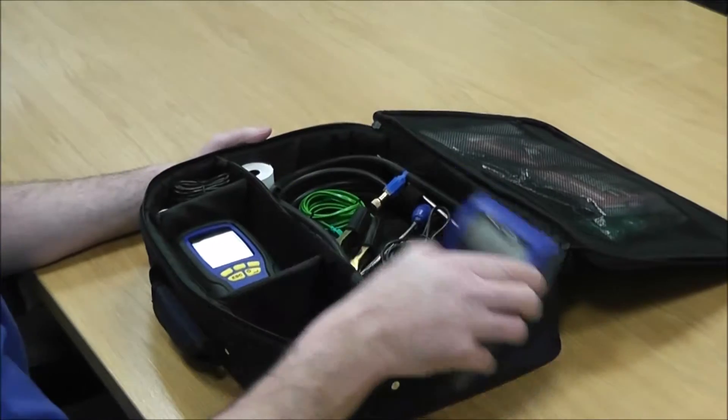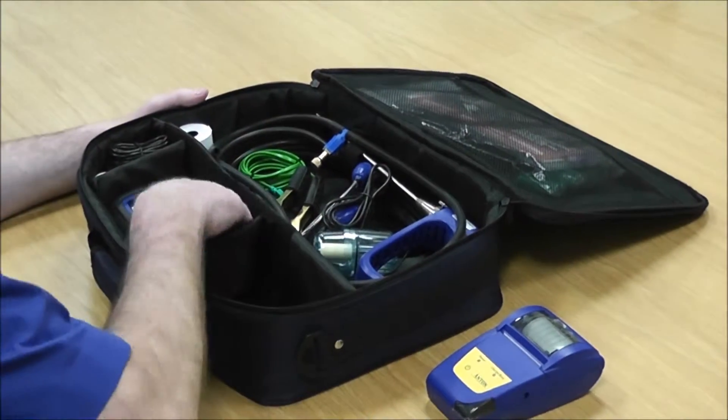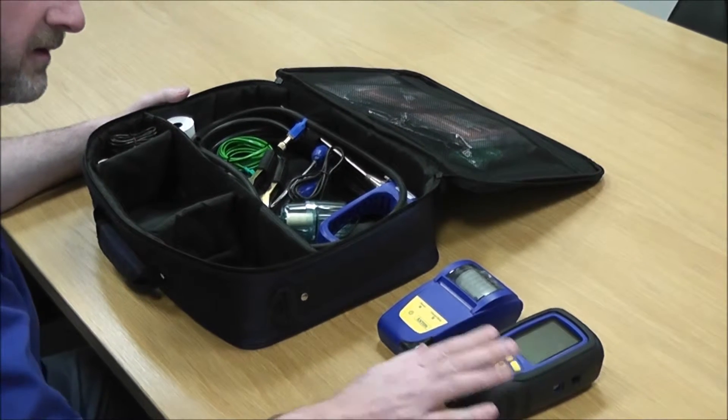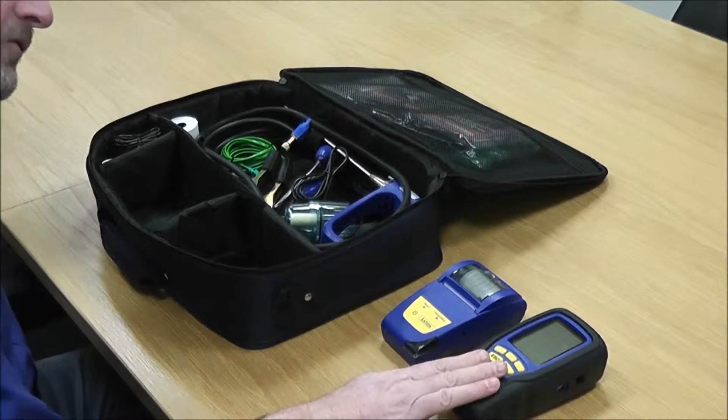In this kit, you get a printer and an analyzer, which is a fully functional analyzer including Bluetooth. You've got Bluetooth communication and communication with the printer.